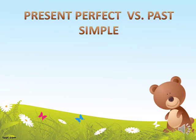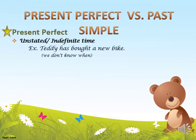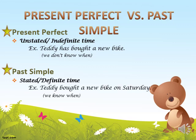Now let's talk about the present perfect versus the past simple. In the present perfect, we talk about unstated or indefinite time — Daddy has bought a new bike, but we don't know when. In the past simple, we know exactly when something happened. So the first key difference is: in the present perfect we don't know when; in the past simple we know exactly when.